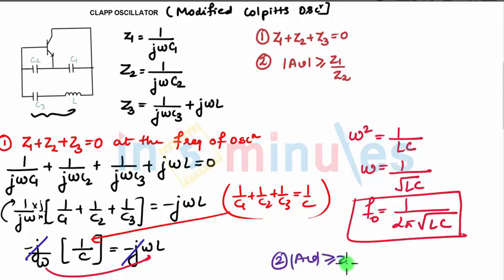And the second condition says Av should be greater than or equal to Z1 by Z2, so it should be greater than equal to 1 upon j omega C1, 1 upon j omega C2. So it should be greater than equal to C2 by C1. This is the second condition.